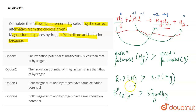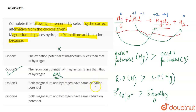Since Mg is getting oxidized, it has a greater tendency to oxidize itself and a lesser tendency to reduce itself, so its reduction potential is less than that of hydrogen. Therefore, the correct answer is option 2. Option 1 is incorrect based on the oxidation potential analysis, and equal potentials can be ruled out.